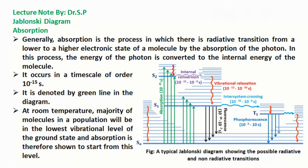Absorption is the process in which there is a radiative transition from a lower to a higher electronic state of a molecule by the absorption of a photon. In this process, the energy of the photon is converted to the internal energy of the molecule. It occurs on a timescale of order 10 to the power minus 15 seconds and is denoted by a green line in the diagram. At room temperature, the majority of molecules will be in the lowest vibrational level of the ground state, and absorption is therefore shown to start from this level.